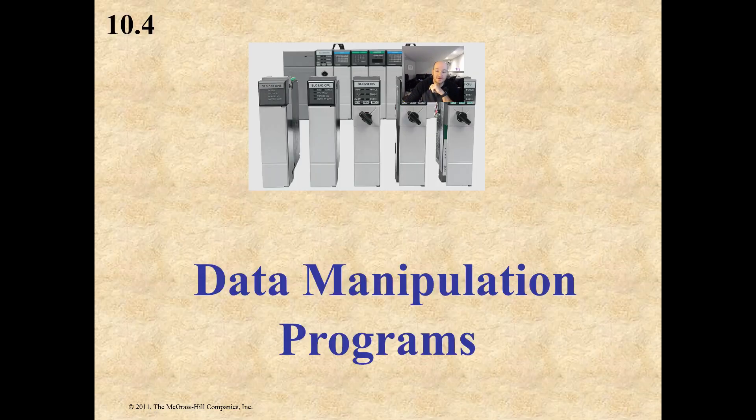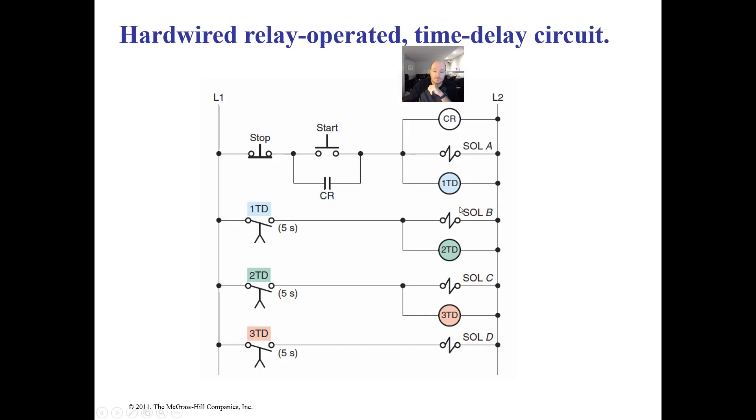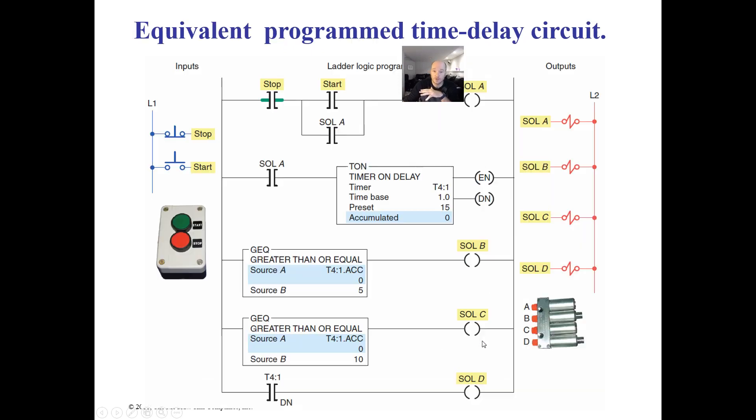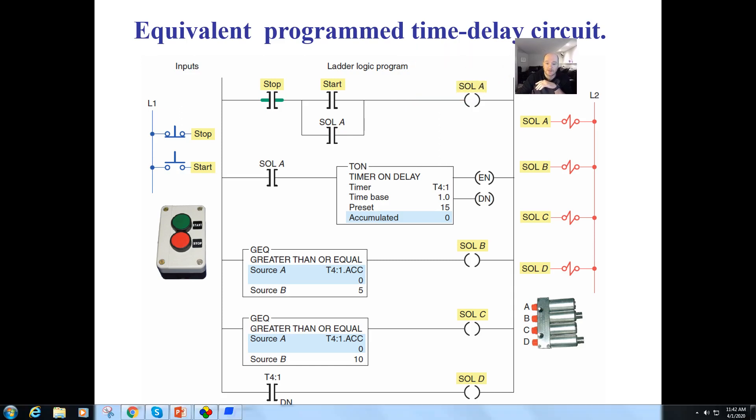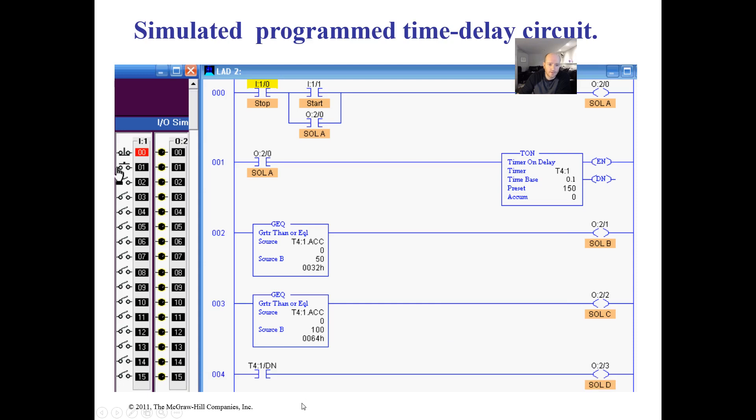I think you guys get the general idea. Let's show where we can use some of these. Here's a multiple timer situation where solenoid A will go on right away. Five seconds later B comes on, five seconds after that C goes on, five seconds after that D goes on. Look how easy this is. Instead of having a bunch of counters, we can have a start-stop that activates a timer. Hit start button, solenoid A came on.